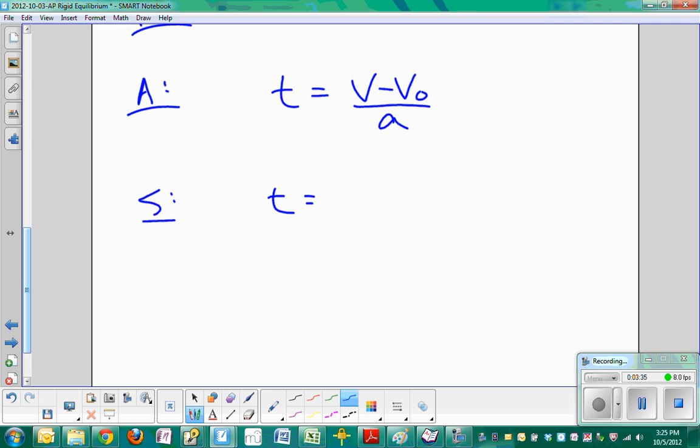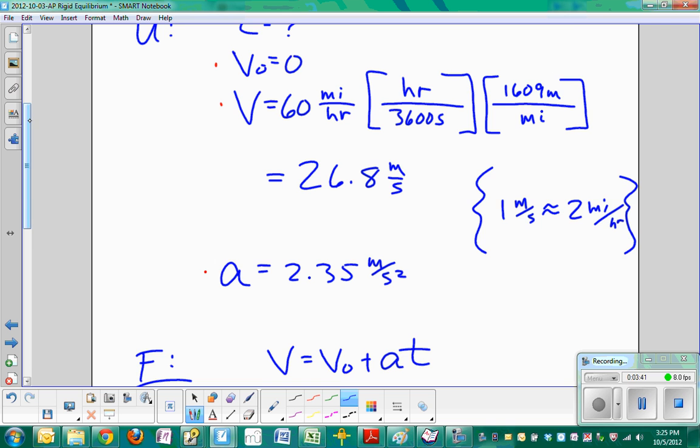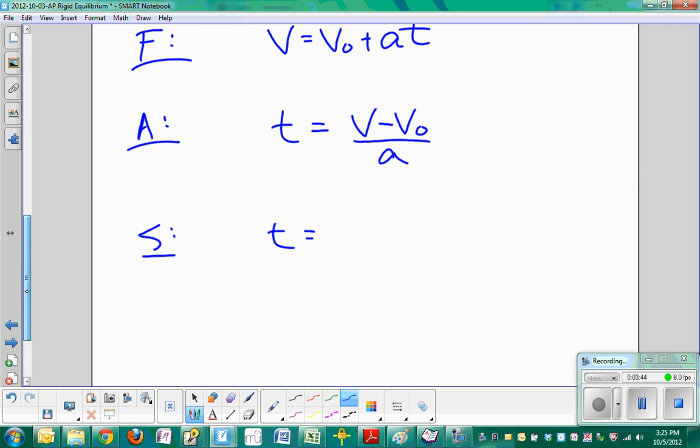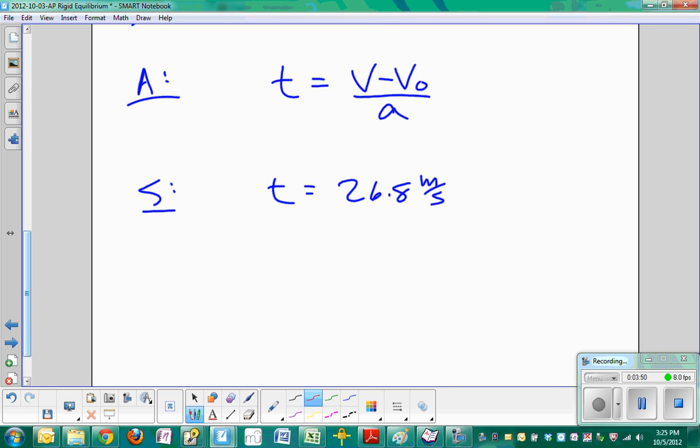So T is equal to V, our final velocity, 60 miles per hour, or, as we gave it, 26.8 meters per second, minus 0, our gift of V0 equal to 0, divided by our acceleration, 2.35 meters per second squared.